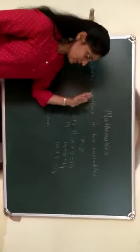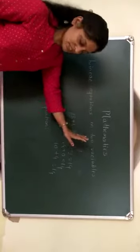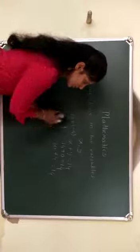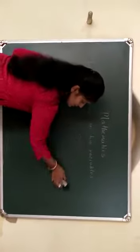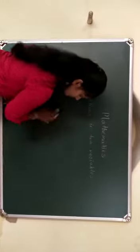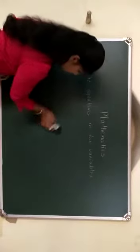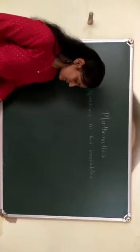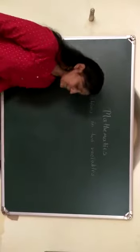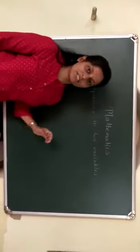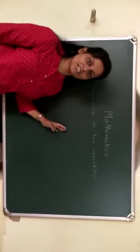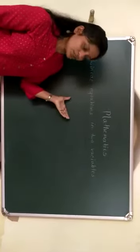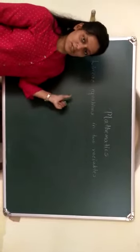Linear equations in two variables means there are two unknowns but two conditions. Solving these two conditions, there are two methods: the first method is the elimination method and the second method is the subtraction method. Today we are going to see the elimination method.